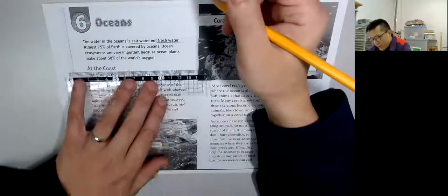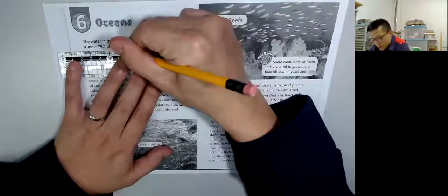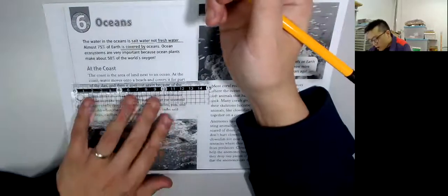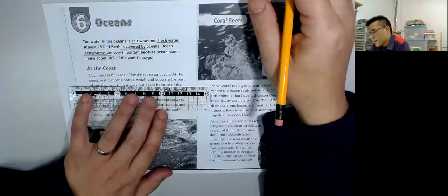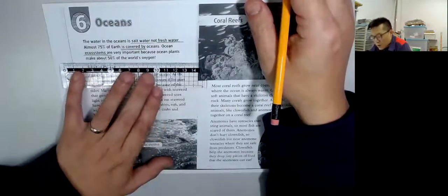Almost 75% of Earth is covered by oceans. Ocean ecosystems are very important because ocean plants make about 50% of the world's oxygen. 原來全球的海洋植物是佔了我們50%的oxygen氧氣,很重要。